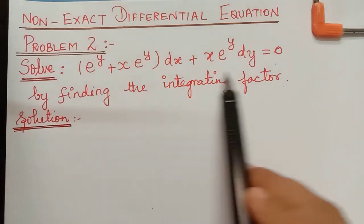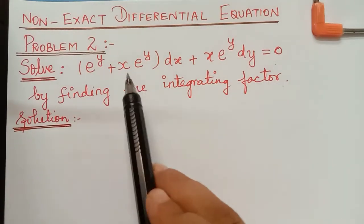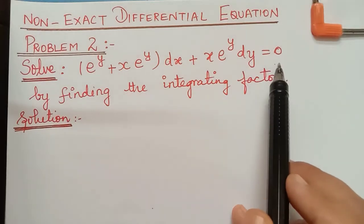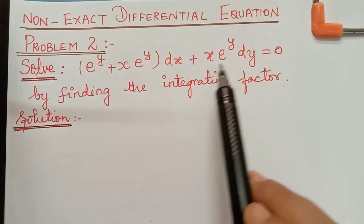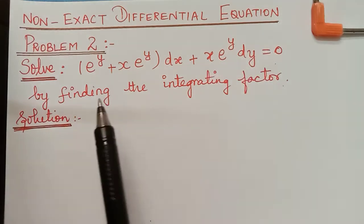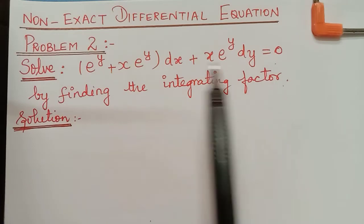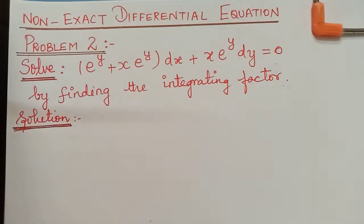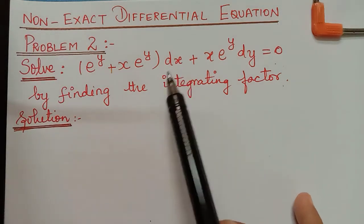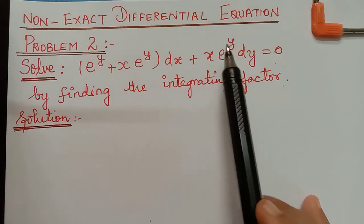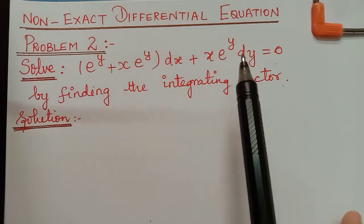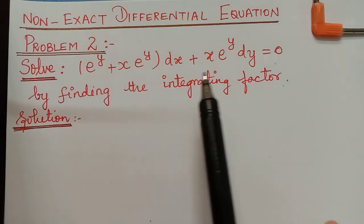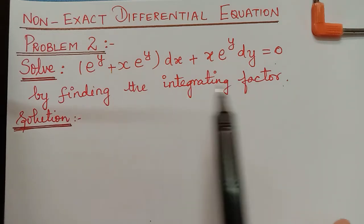The given equation is of the form M dx + N dy = 0. We could actually solve this equation by dividing throughout by x·e^y, which would allow us to separate variables or yield an exact equation. But in this question, they are asking us to solve it by finding the integrating factor.